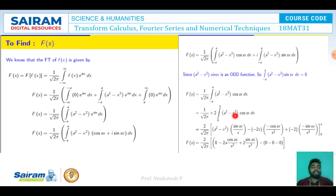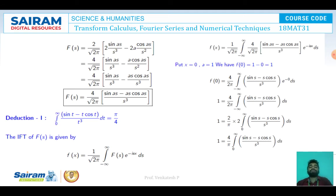To integrate this, I apply Bernoulli's rule. We get (2/√(2π)) · [ (a² - x²)(sin(sx)/s) - (-2x)(-cos(sx)/s²) + (-2)(-sin(sx)/s³) ] from 0 to a. Applying the upper limit: 0 - 2a cos(as)/s² + 2 sin(as)/s³; the lower limit gives zero entirely. So F(s) = (2/√(2π)) · (2 sin(as)/s³ - 2a cos(as)/s²).